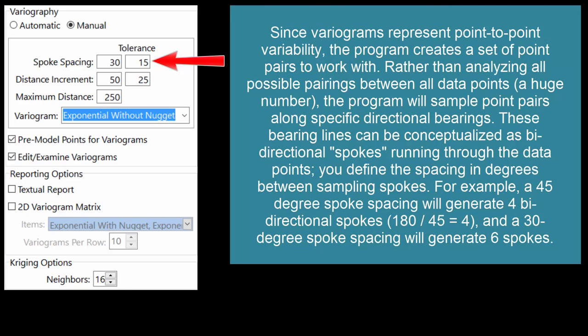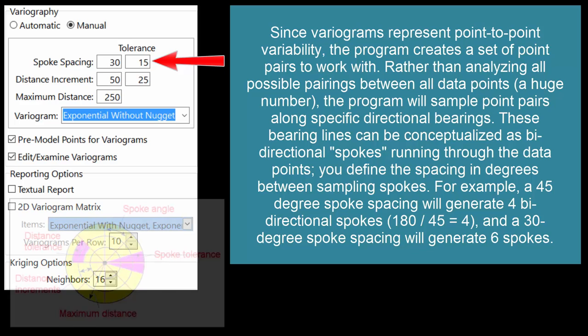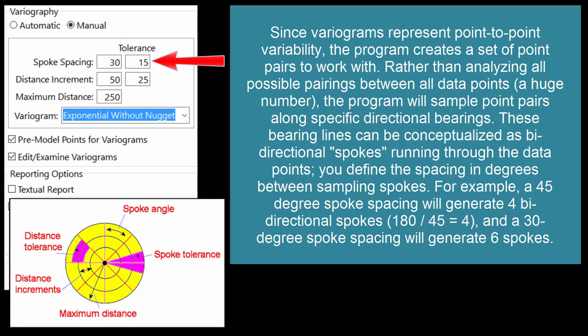Since variograms represent point-to-point variability, the program creates a set of point pairs to work with. Rather than analyzing all possible pairings between all data points, a huge number, the program will sample point pairs along specific directional bearings. These bearing lines can be conceptualized as bi-directional spokes running through the data points. You define the spacing in degrees between sampling spokes.